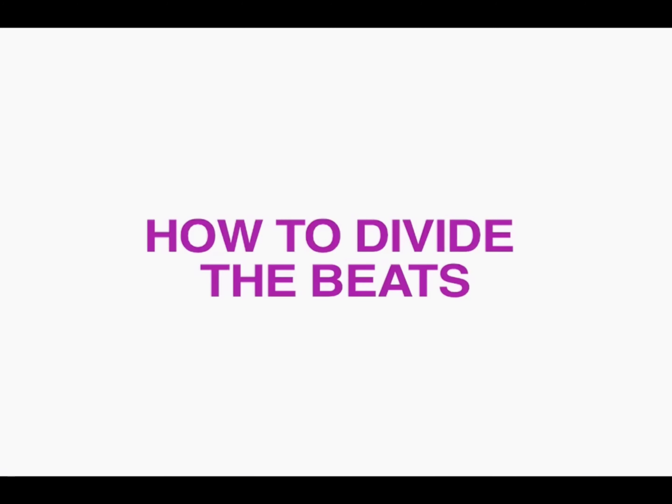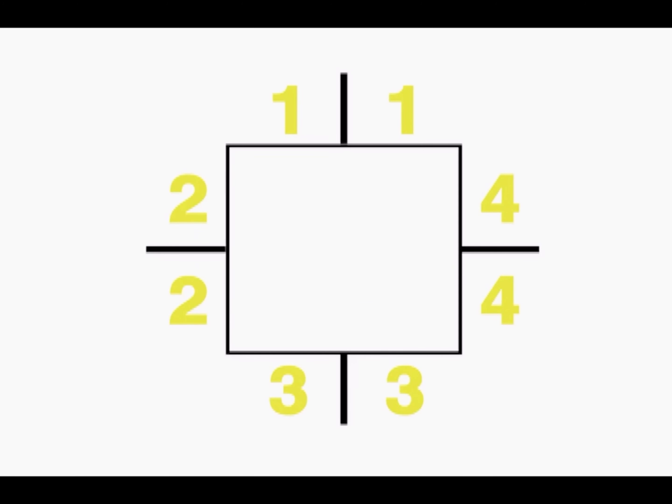Here we can see how each beat or side can be divided into two or more parts. In this way, we can create different values for each note. On this measure, we divide each beat or side into two parts, so you play two notes for each beat. The beats are divided with lines. Let's see an example.